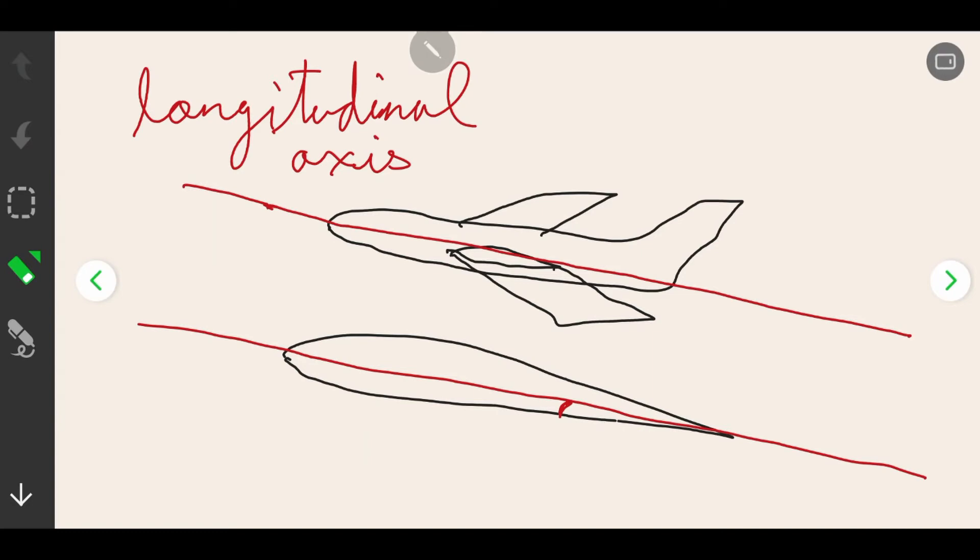Now you can see a line going across an aircraft. This line is known as the longitudinal axis. It goes from the nose of an aircraft to the tail of an aircraft. On an airfoil, it goes from leading edge to trailing edge.